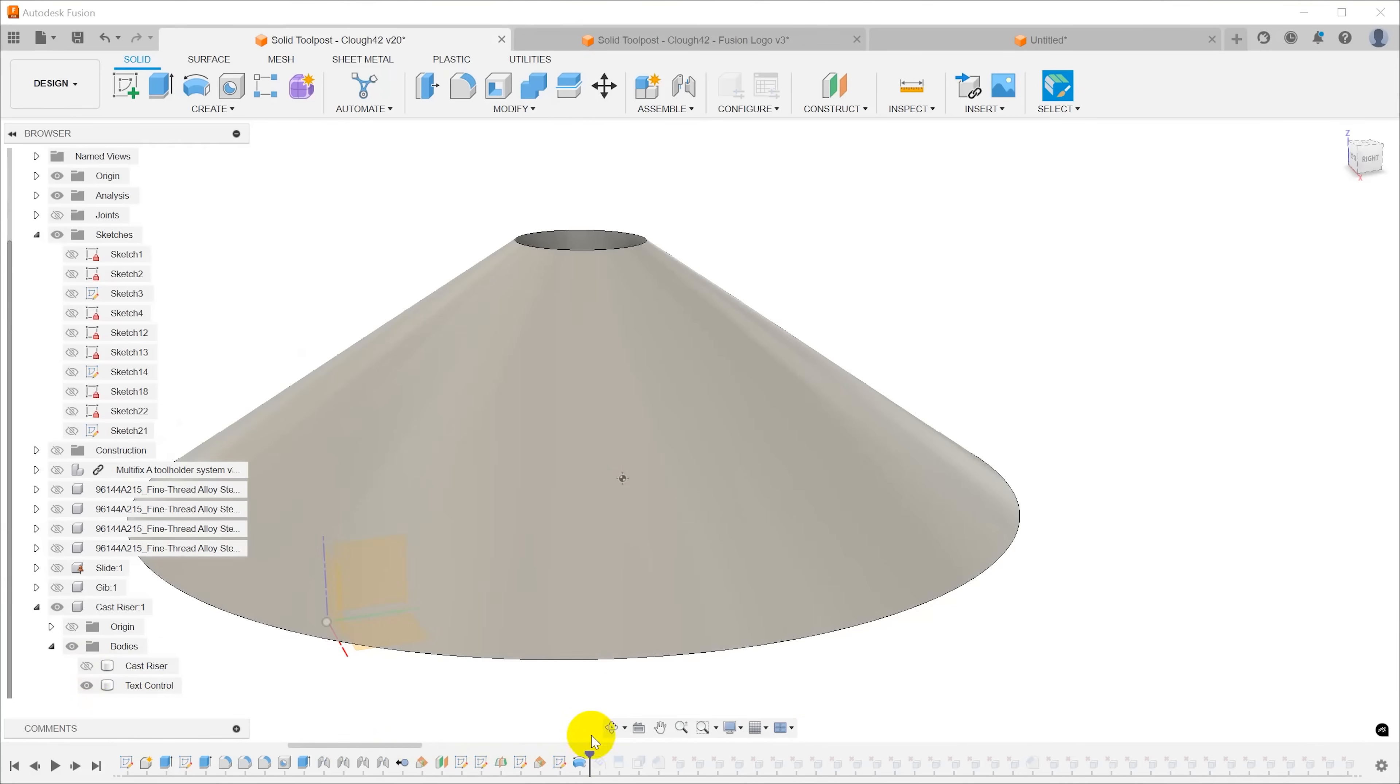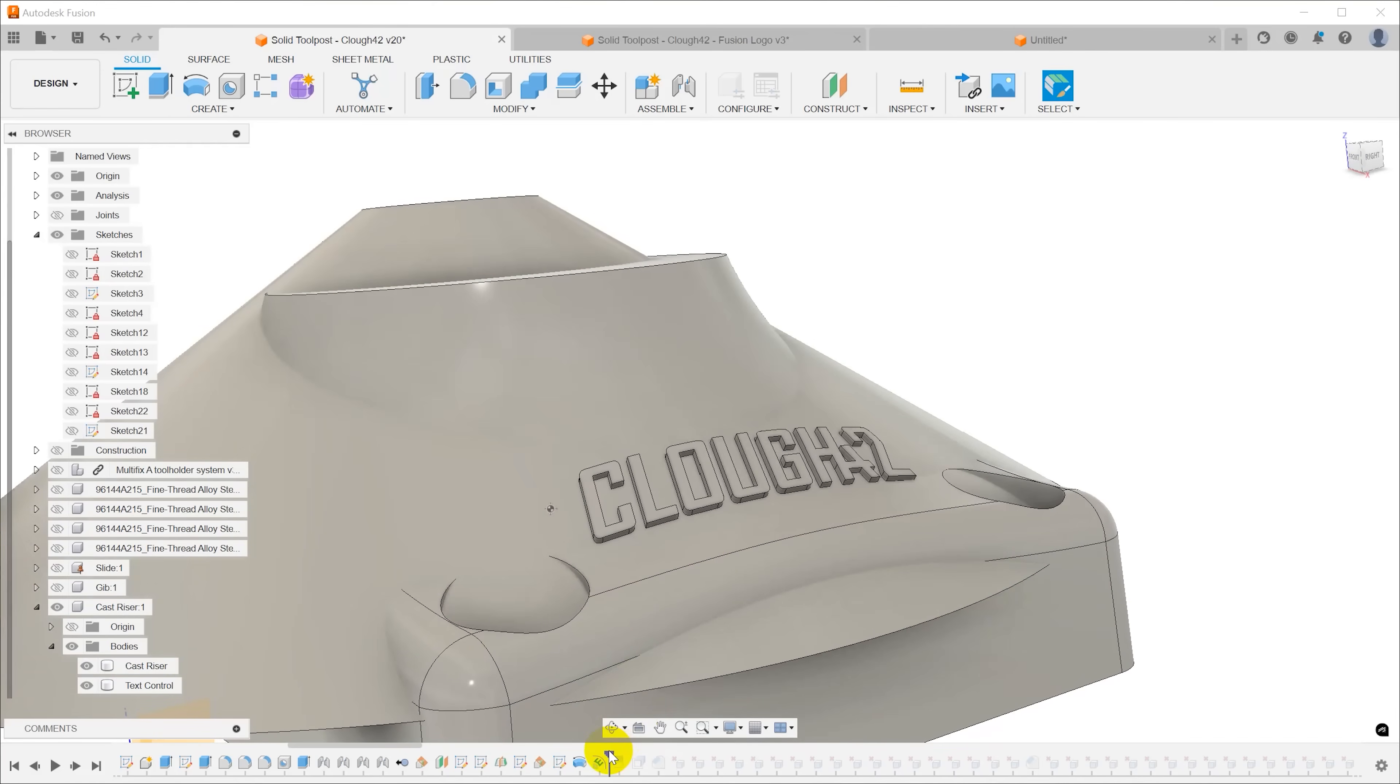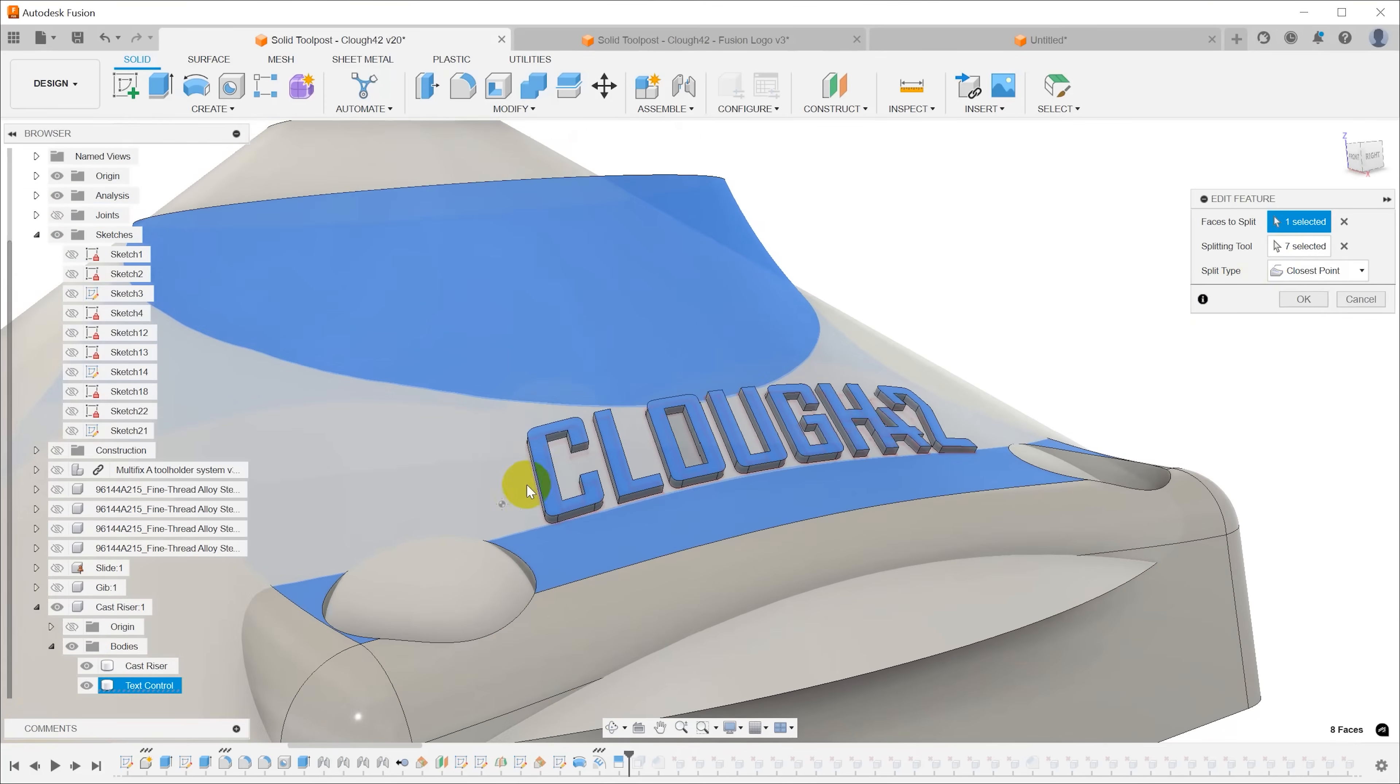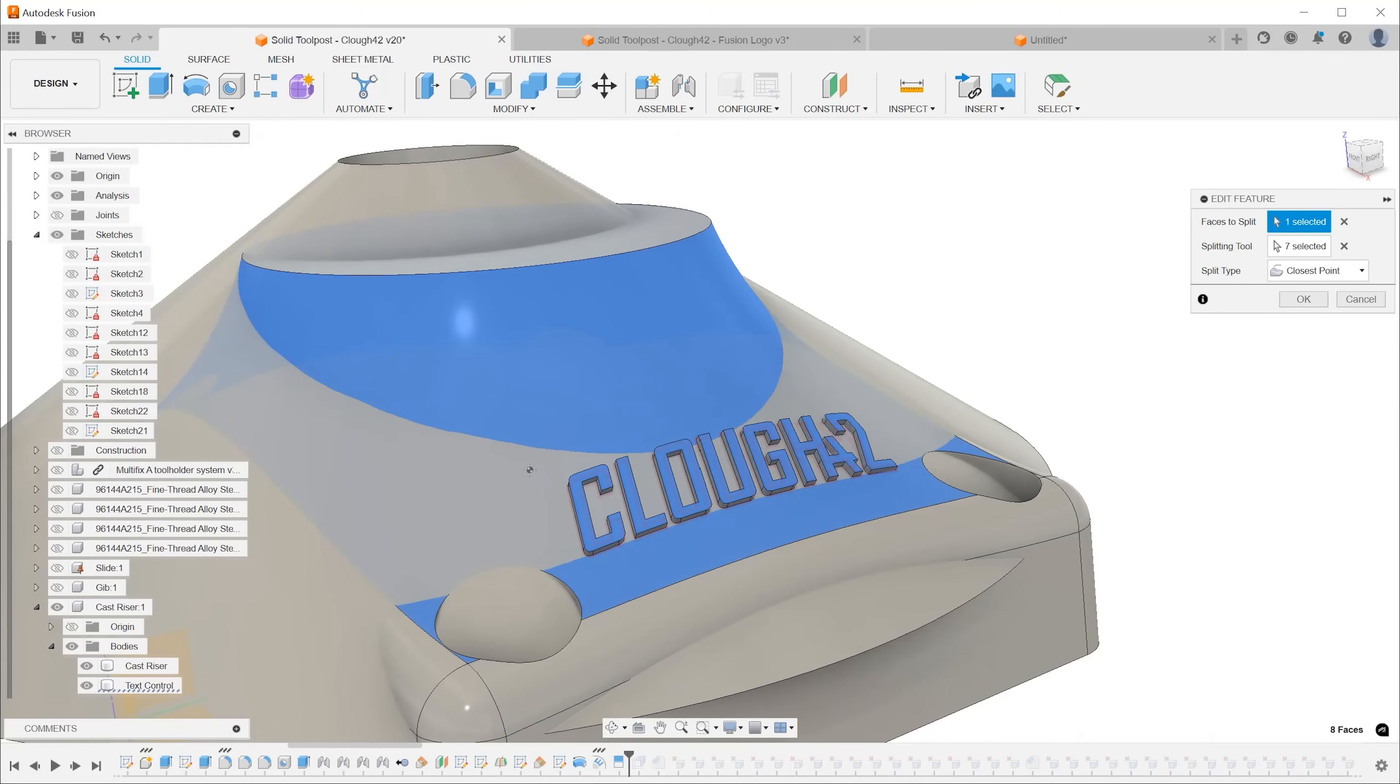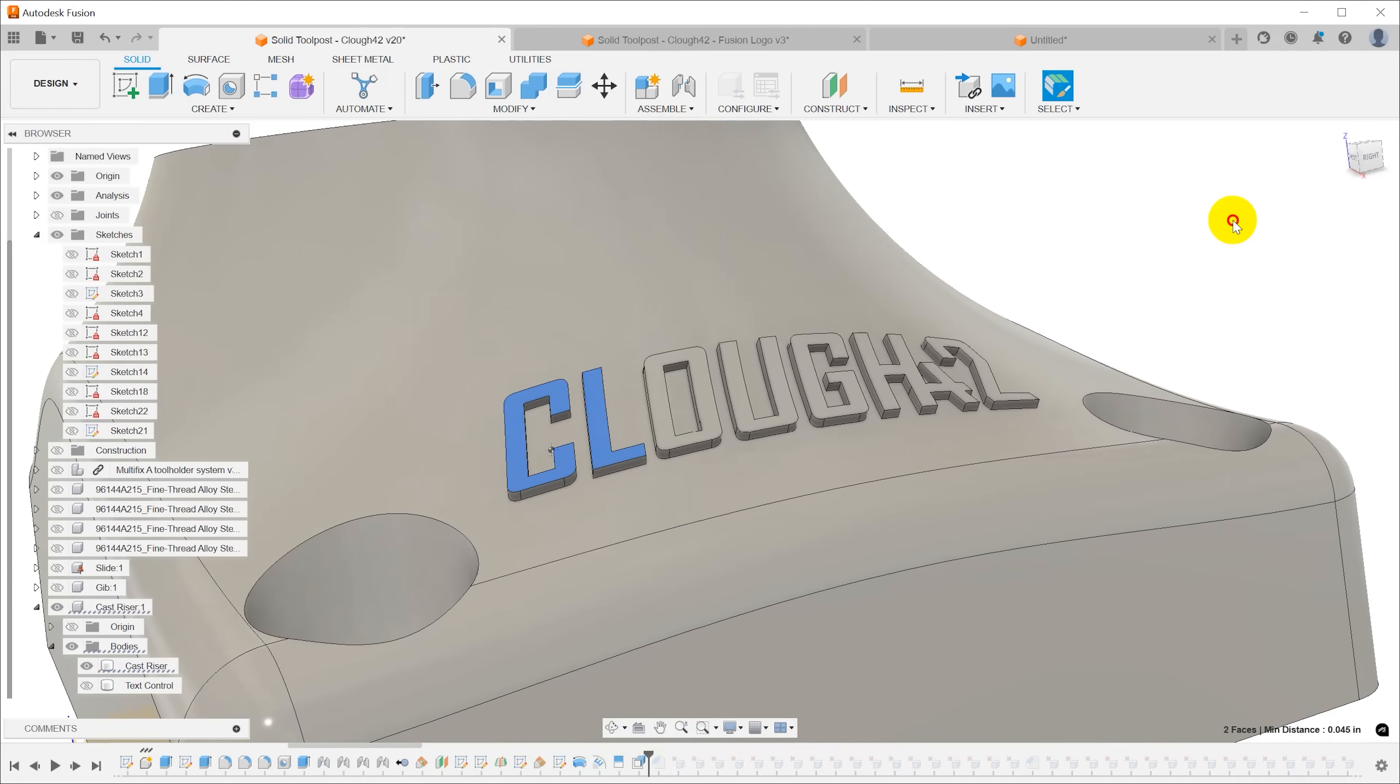So then I can just take my text and use the emboss tool, select my sketch profiles, and select the surface that I want to emboss it onto, and create that text. And then to map that onto the curved surface of the tool post riser, we just use the split face feature. And so with that on there, we can then turn off our cone and do a face offset. I pulled it up 30 thousandths of an inch, and now we have our text.